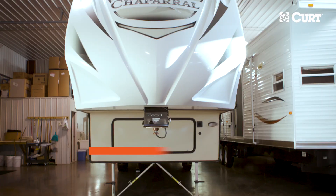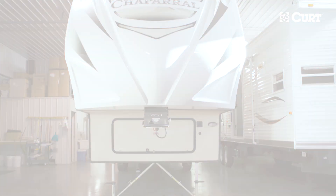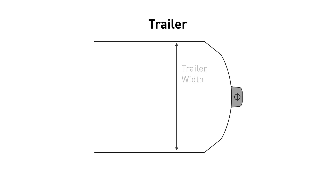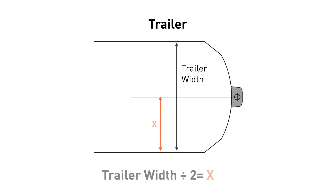Step 1: Determine the width of the trailer and divide by 2. This will give you measurement X. Measure the width of the trailer in inches and divide by 2. Common trailer sizes are 84 inches, 96 inches, or 102 inches.